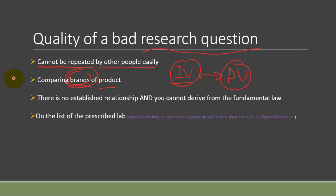Number three, if there's no established relationship you can find at the same time you cannot derive anything from the physics law then probably you should not do it.